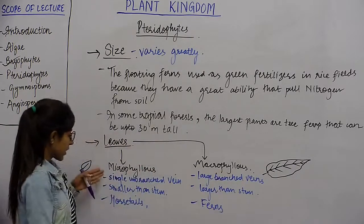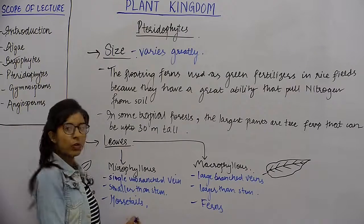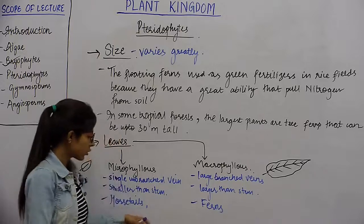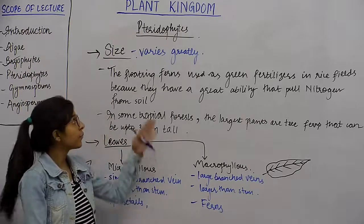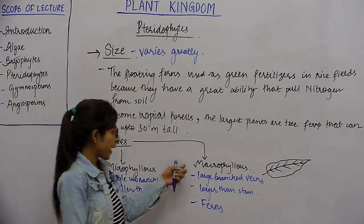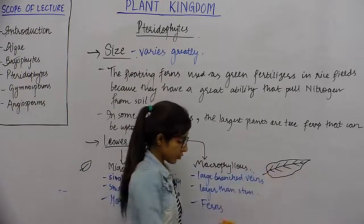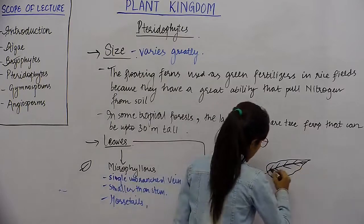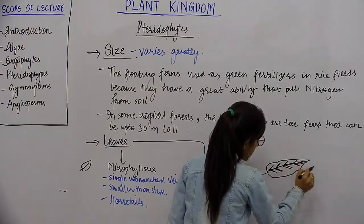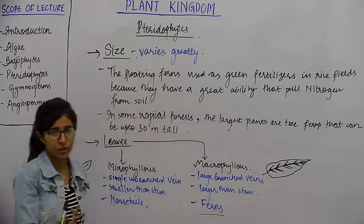Microphyllous leaves have single unbranched veins, stem se bhi choti hoti hai, and they are found in horse tails. Macrophyllous leaves mein large branched veins hoti hai — ek main vein hai jo further divided into sub-veins hoti hai — ye stem se bhi badi hoti hai and they are present in ferns.